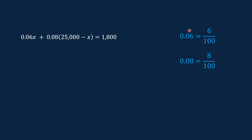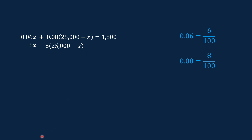0.06 times 100 is equal to 6, and 0.08 times 100 is equal to 8. Let us multiply both sides of this equation by 100. So 100 times 0.06X is equal to 6X, and 0.08 times the quantity (25,000 minus X) times 100 is equal to 8 times the quantity (25,000 minus X). And 1,800 times 100 is equal to 180,000.